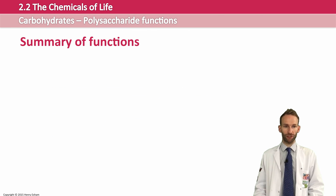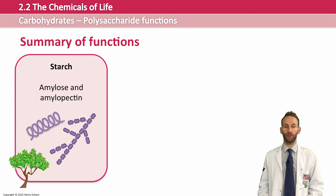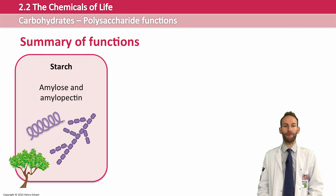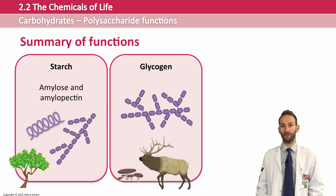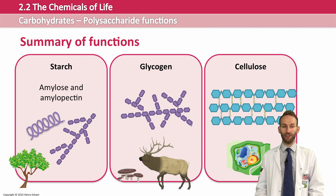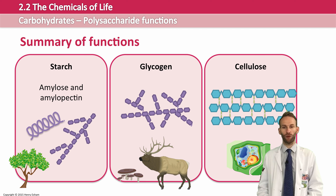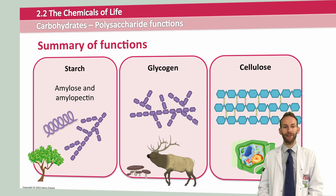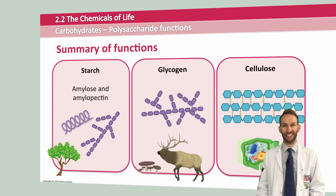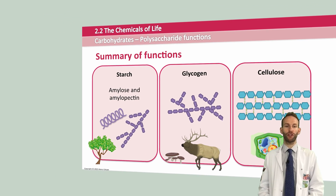In summary: starch is a very good storage molecule for plants because of the quick and slow energy release due to the combination of amylose and amylopectin. Glycogen is a source of fast-release energy, because the side chains of glucose are easily broken off for use in respiration in animals and fungi. Cellulose is very hard to digest, as many organisms do not possess the enzymes required to break the 1,4 glycosidic bonds between beta glucose molecules — which is why ruminants such as cows need bacteria living in their gut to help them break down cellulose.